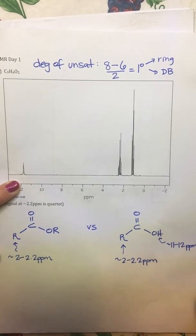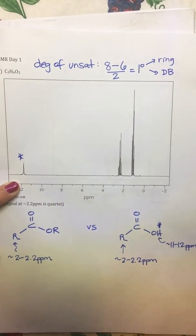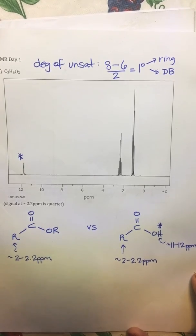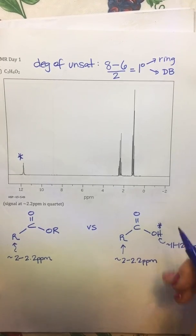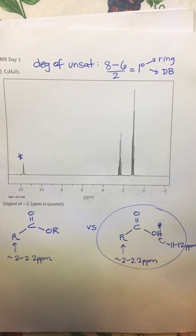So we can see that right there, that is this guy right here. So right away we can rule out then our ester and we know that we're working with a carboxylic acid. Now we have to put the rest of the pieces together.